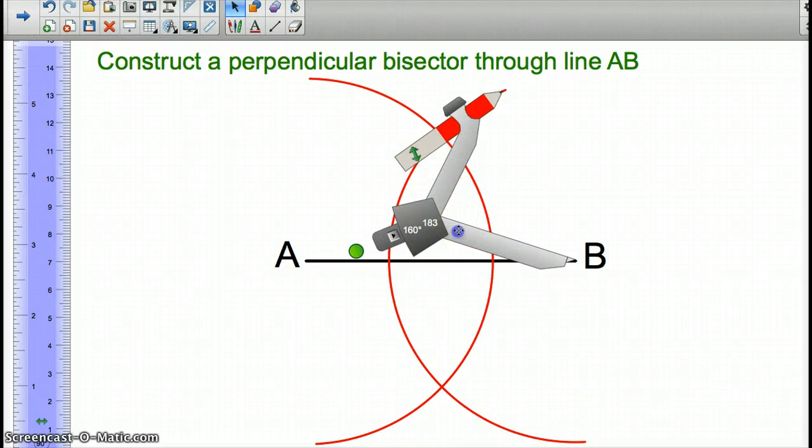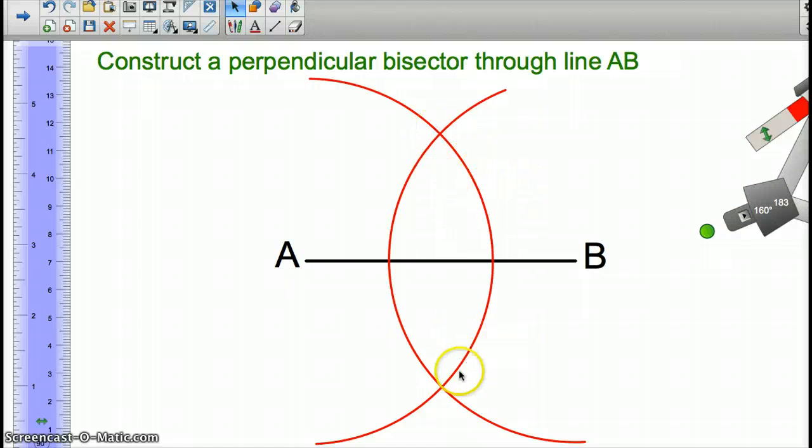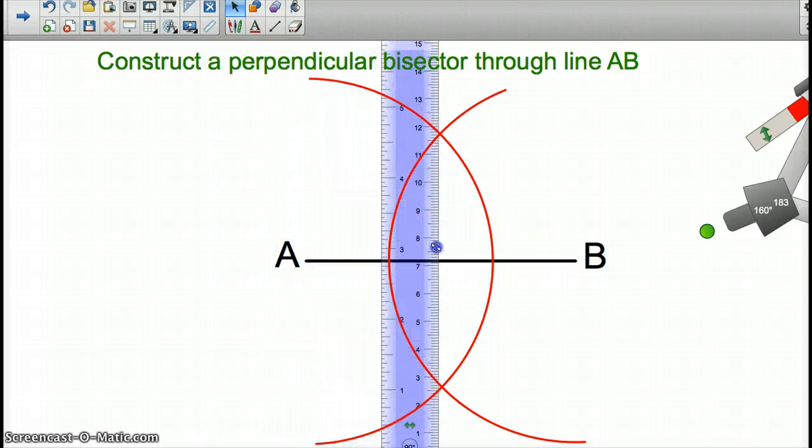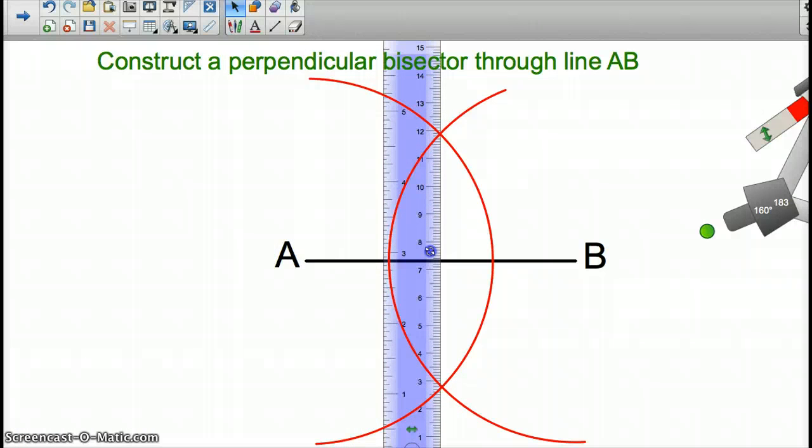Now, if you notice, we now have two arcs with two points of intersection. Then I'm going to take my straight edge, my ruler, and I'm going to line up the two points of intersection.